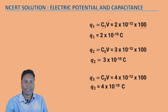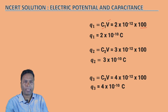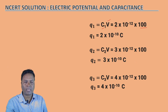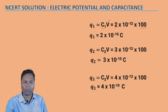Now if you add the individual charges: 2 + 3 + 4, the total comes out to 9 × 10⁻¹⁰ coulombs, which matches the total charge calculated earlier. This completes the solution.